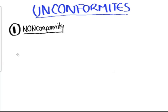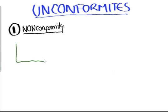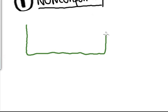The first unconformity is known as nonconformity and represents a contact or surface between metamorphic or igneous rocks and a sequence of sedimentary rocks.